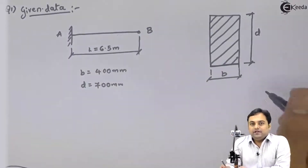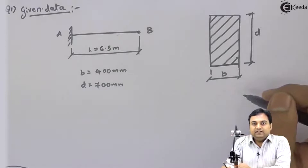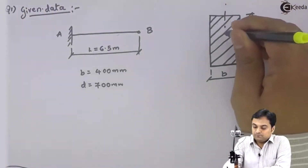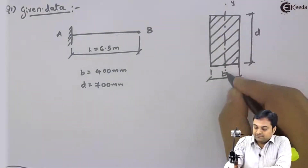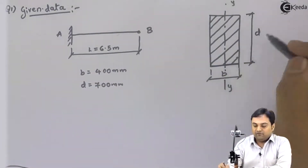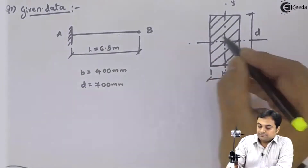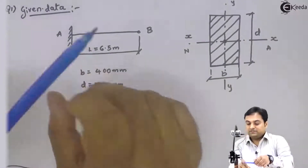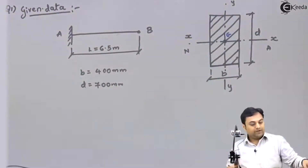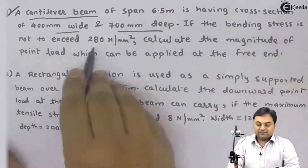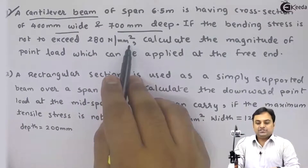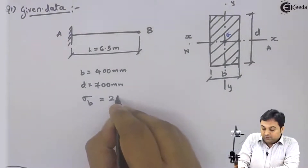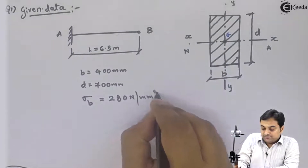For this rectangular section, at half of the width we have the Y-axis, and exactly at half of the depth we have the X-axis, which is the neutral axis. The two intersections give us the centroid G. The bending stress sigma_B is equal to 280 Newton per mm².